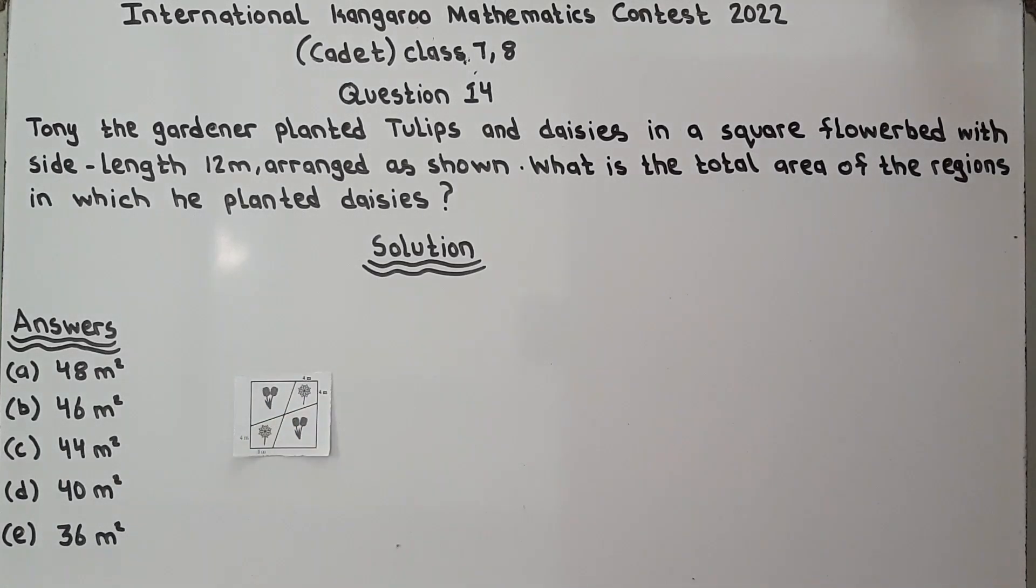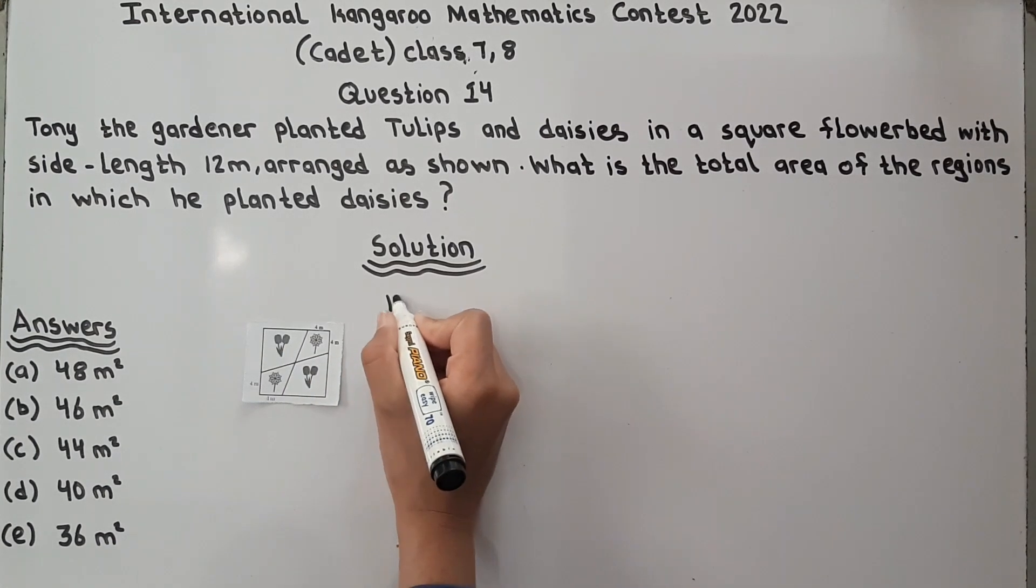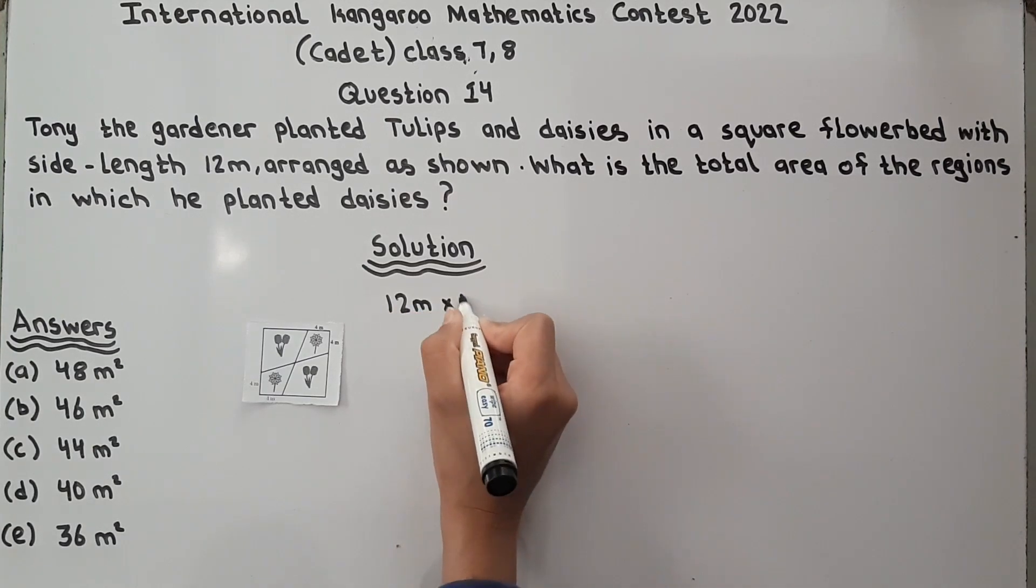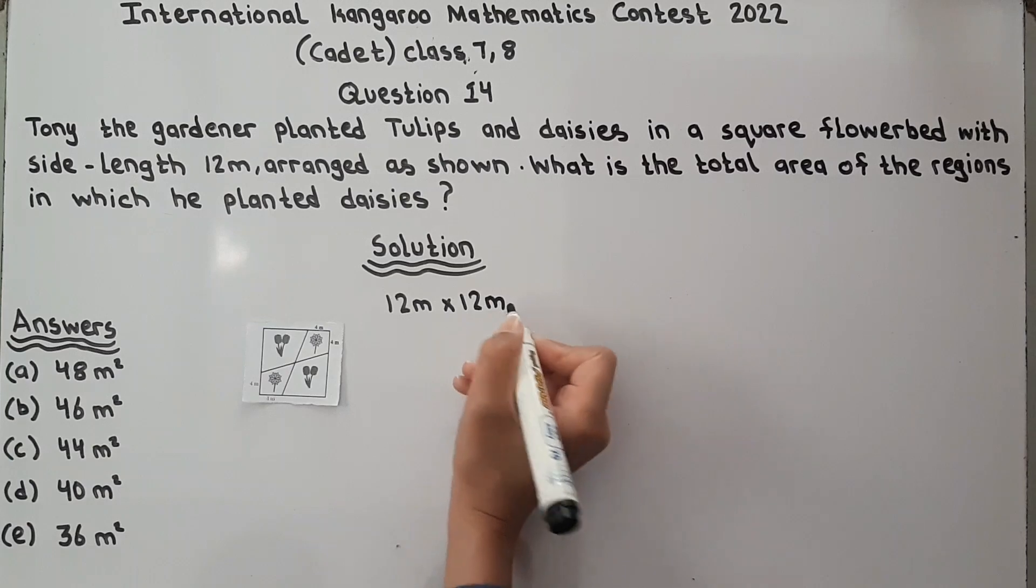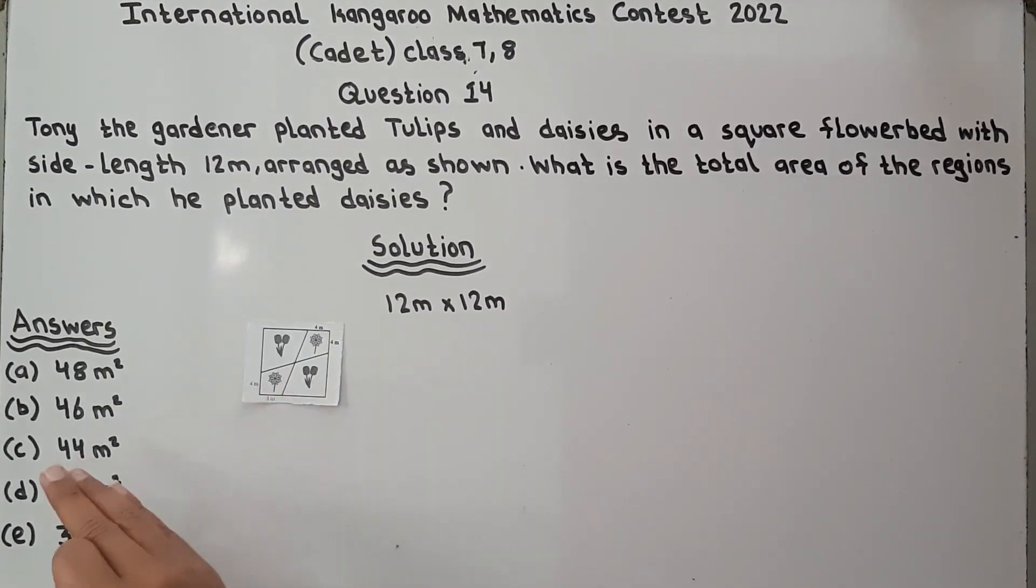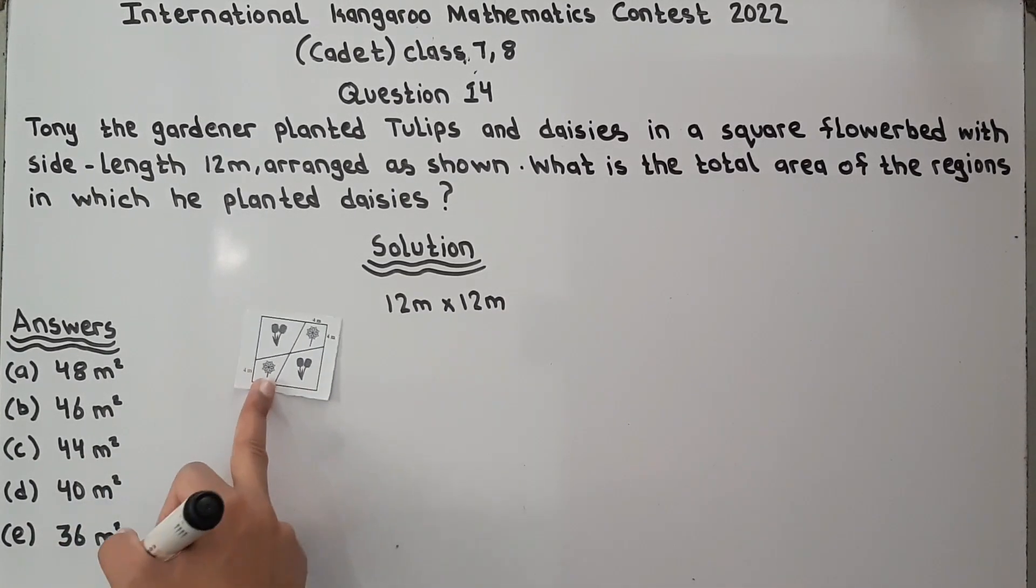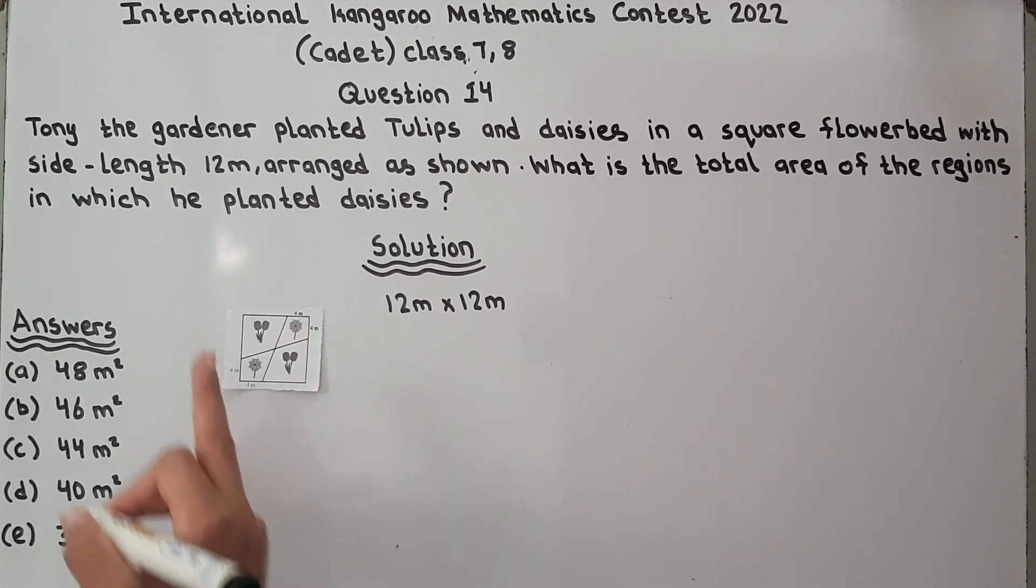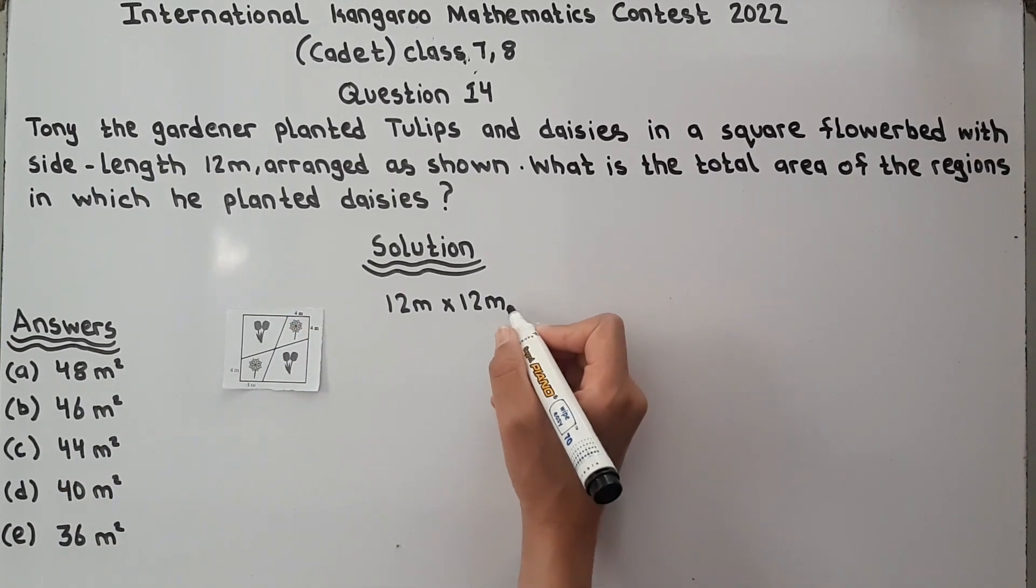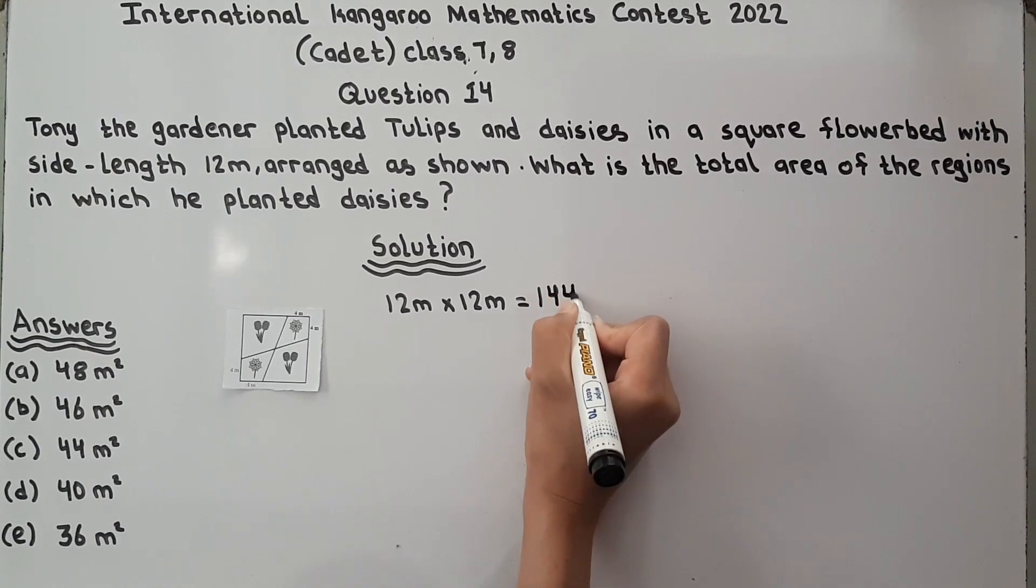So look, if we have to find it, we will take its side length 12 meters multiply by 12 meters to find its area. This side length is 12 meters multiply by 12 meters is equal to 144 meters square.